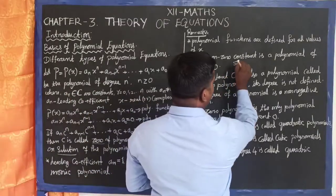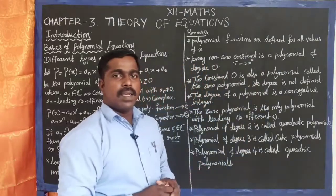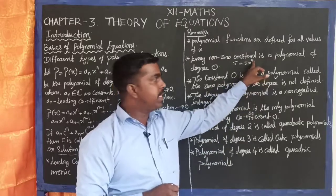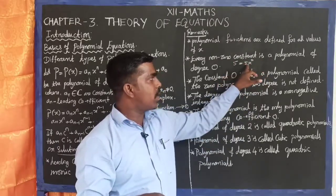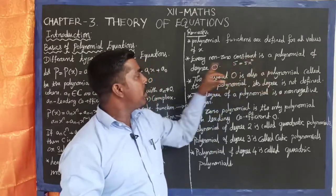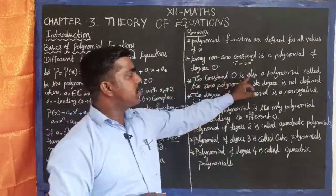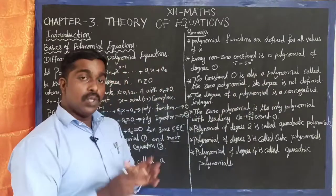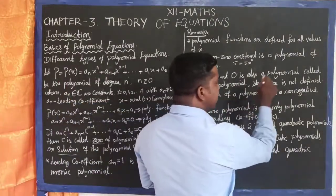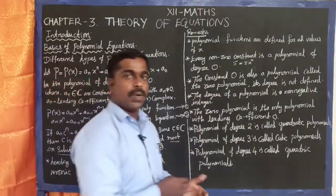A non-zero constant like 5 can be written as 5·x⁰, so it is a polynomial of degree 0. Next, the constant 0 is also a polynomial — it is called the zero polynomial — but its degree is not defined.